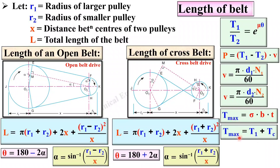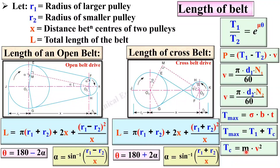One more equation for maximum tension: T_max = T1 + Tc, where T1 is the tight side tension and Tc is the centrifugal tension — both in Newton. Tc = mv², where Tc is the centrifugal tension in Newton, m is the mass of the belt in kg, and v is the velocity of the belt in meters per second.